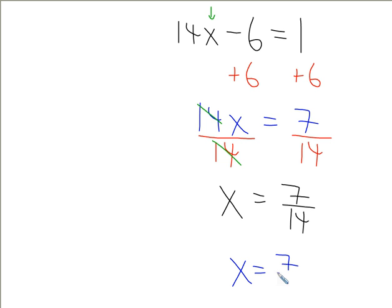So we have 7 over 14. We can divide a 7 out of the top of this fraction. So if we divide a 7 out of the top of this fraction, we end up with 1. But to keep the fraction equivalent, we have to also divide a 7 out of the bottom of this fraction as well. So 14 divided by 7, which will give us 2 on the bottom.